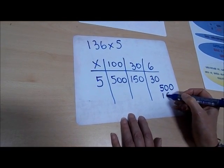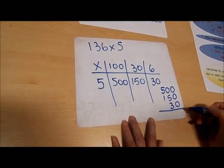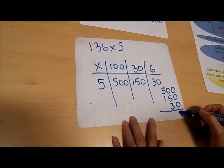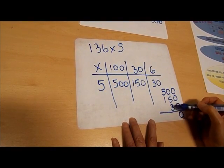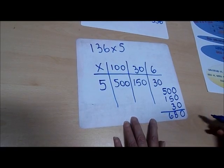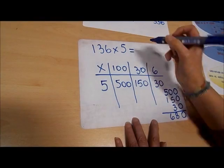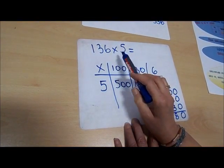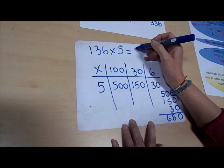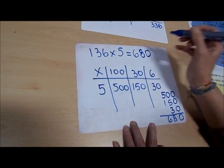So this is my answer, 680. So 136 multiplied by 5 is 680.